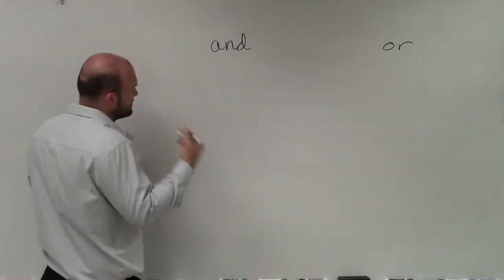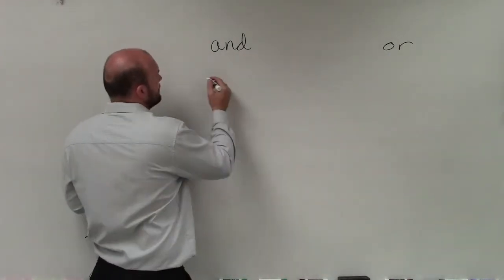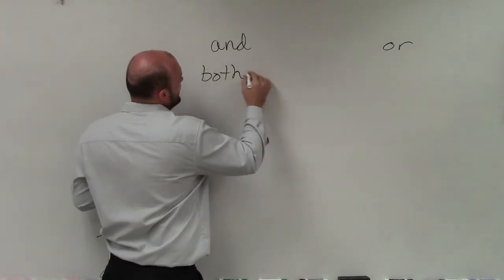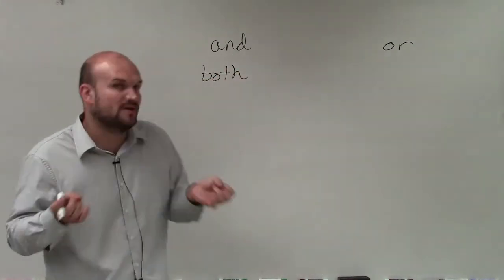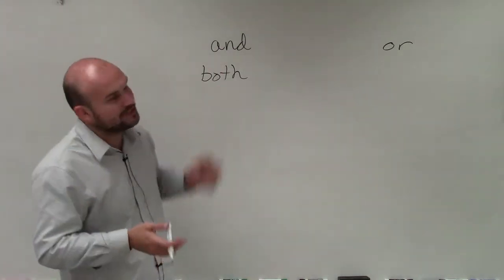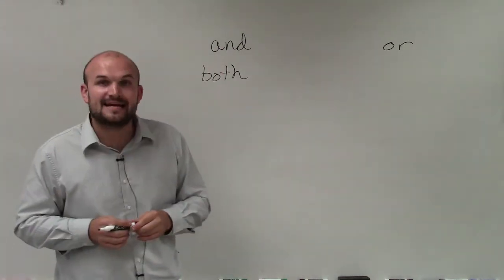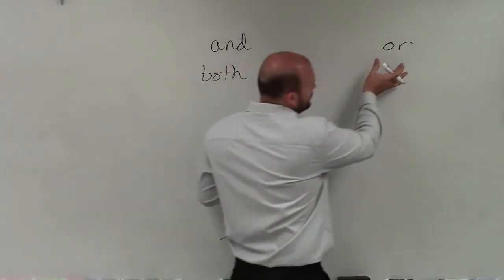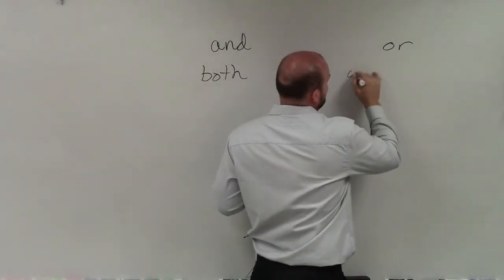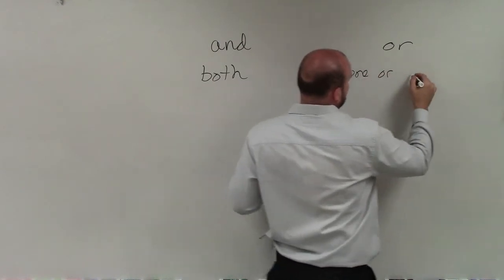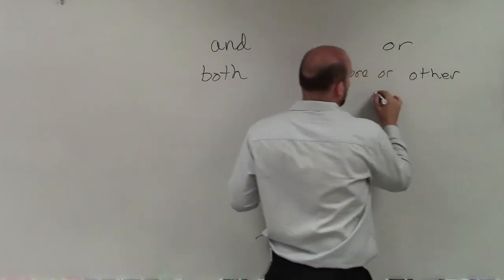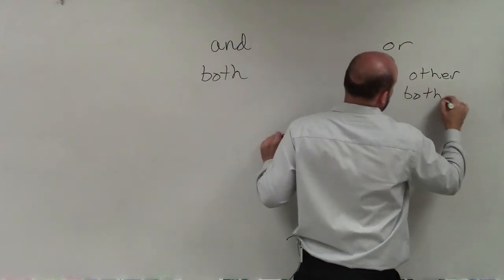When we're talking about the solution with an and compound inequality, we want the solution that is included in both of our inequalities. That means both solutions have to be true when we're dealing with an and compound inequality. However, when we're dealing with an or compound inequality, it can be one or the other or both inequalities.